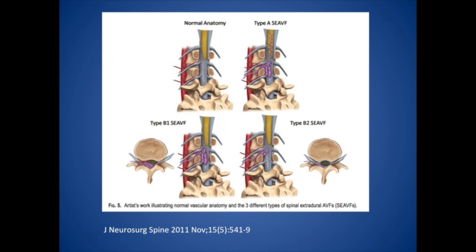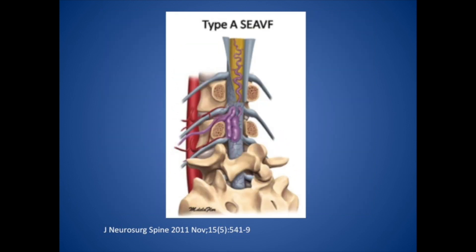Spinal epidural arteriovenous fistulas have been previously classified as type A and type B, with type B subclassified into type B1 and B2. Classification is based on the extra- and intradural components and also mass effect from the extradural component. Our current case is type A because there is significant mass effect from a very large epidural vein, but there are also serpentine vessels intradurally.